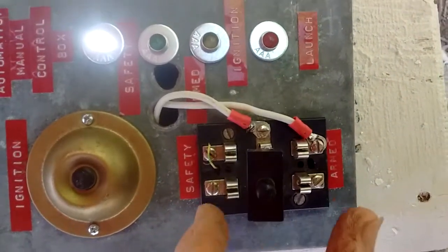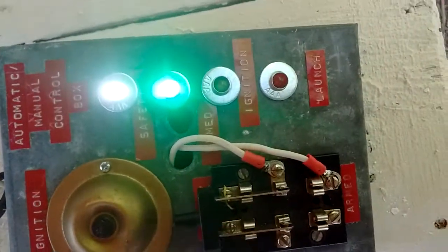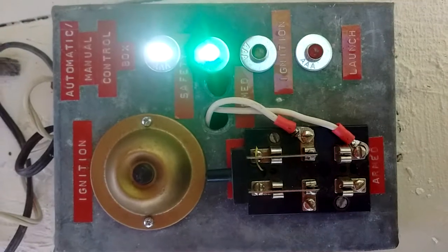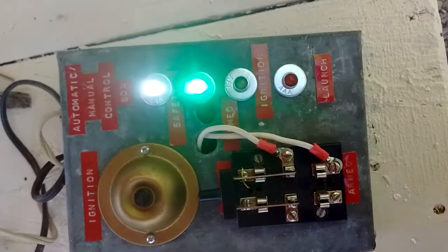And then when the throw switch goes to the safety position, it won't launch to energize the igniter. The green light comes on.